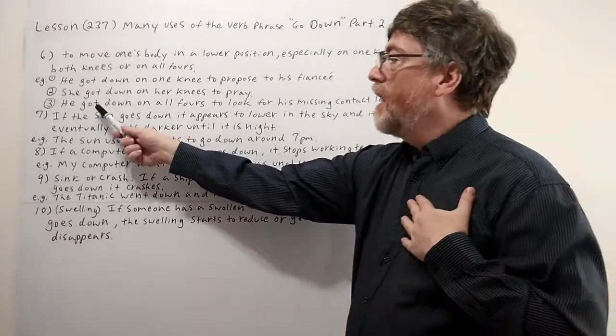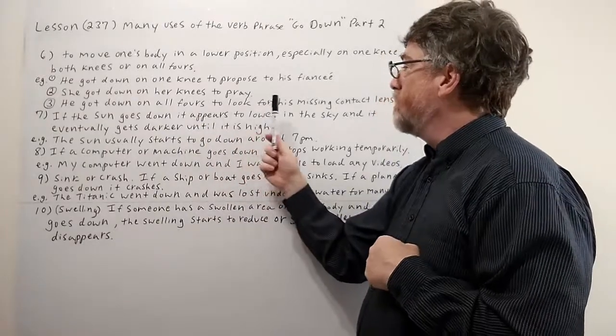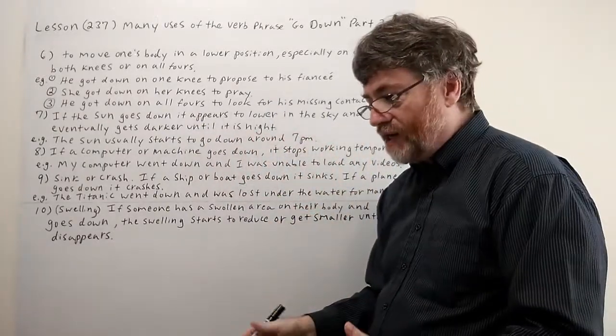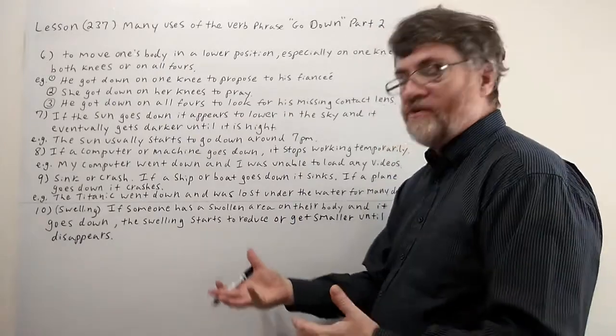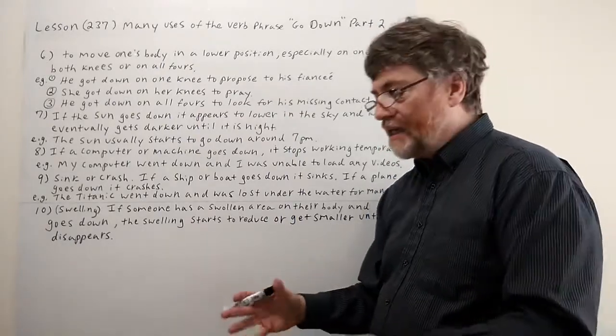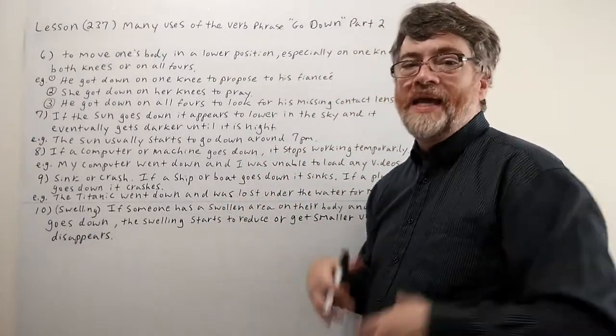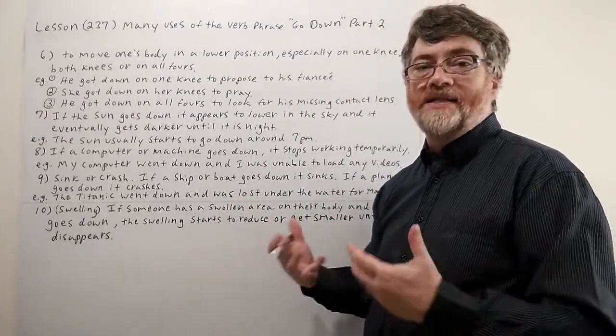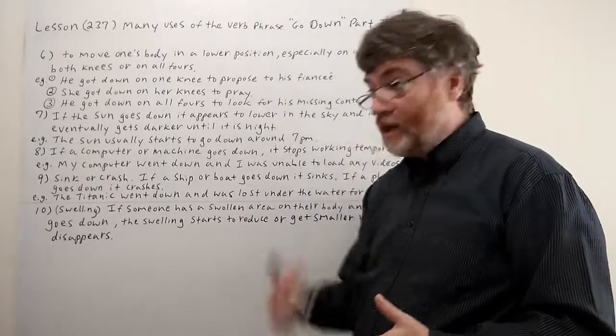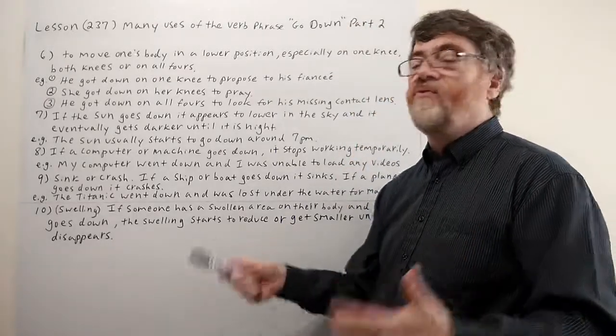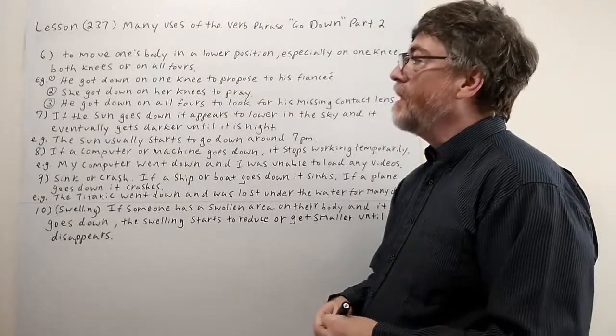He got down on all fours to look for his missing contact lenses. Maybe he couldn't find it or maybe he thought it fell under a couch or a sofa, and he's down on all fours looking very close to the ground. Especially if somebody needs their contact lens to see, then they probably only got one good eye, so they want to get closer to it.